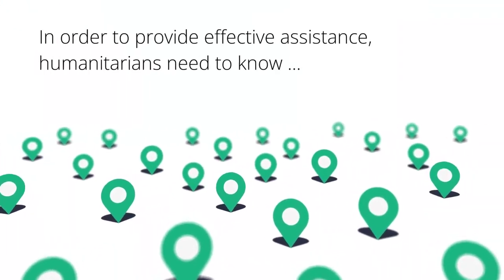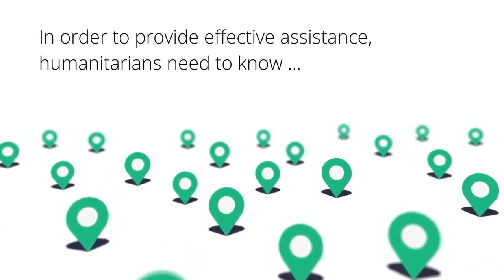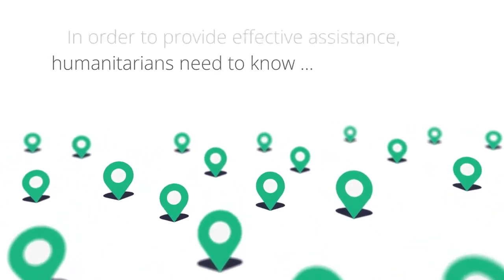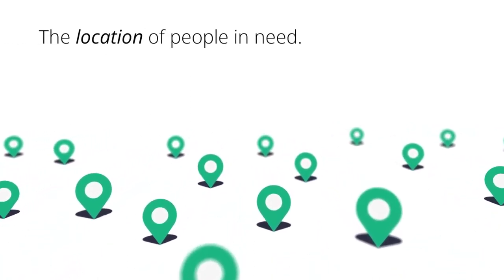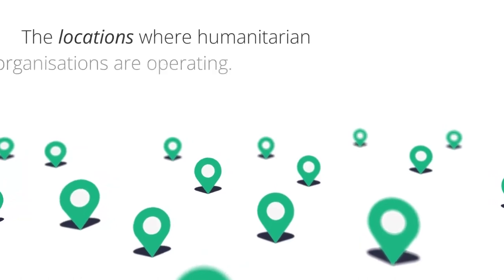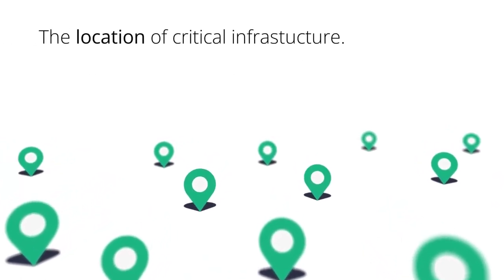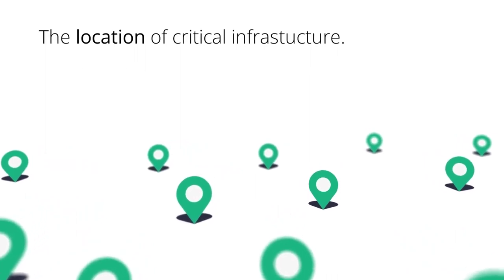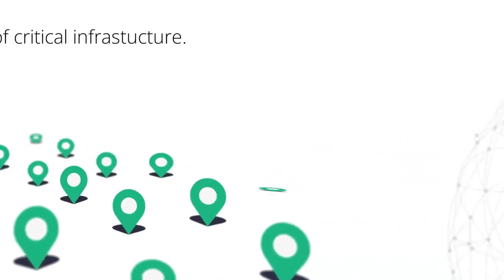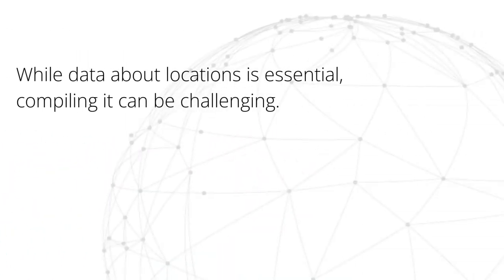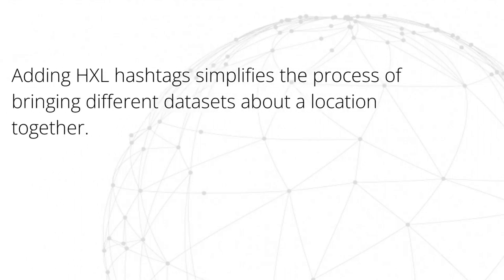In order to provide effective assistance, we need to know a few pieces of essential information, including the location of people in need, the locations where humanitarian organizations are operating, and the location of critical infrastructure like schools and health facilities. While data about locations is essential, compiling it can be challenging. Adding HEXL hashtags to humanitarian datasets simplifies the process of bringing different datasets about a location together.